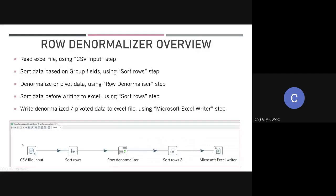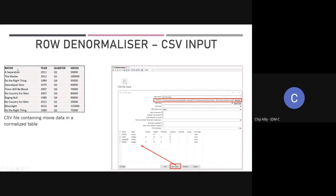The first step in the transformation stream is a CSV file input. Here's the data within the CSV file: a list of movies — some of my favorite movies. We have the movie title, the year that the movie was released, the quarter of that fiscal year (Q1, Q2, Q3, Q4), and how much the movie grossed in that fiscal year quarter. This is dummy data — I don't actually know how much money these movies grossed, but that's what the dataset contains.